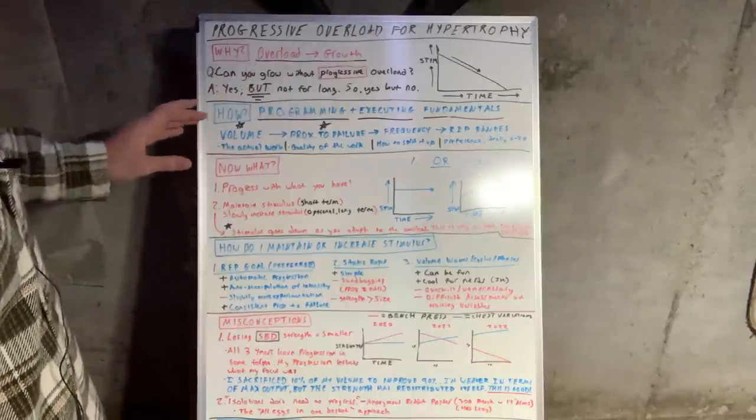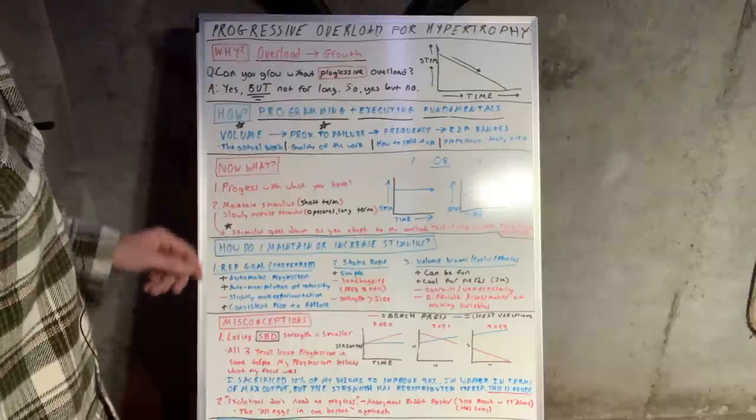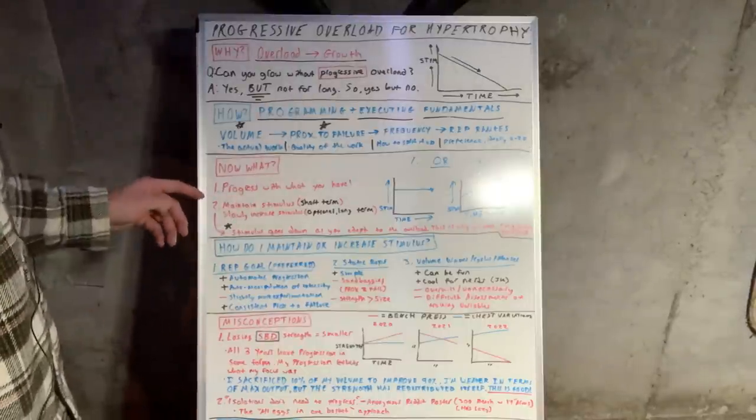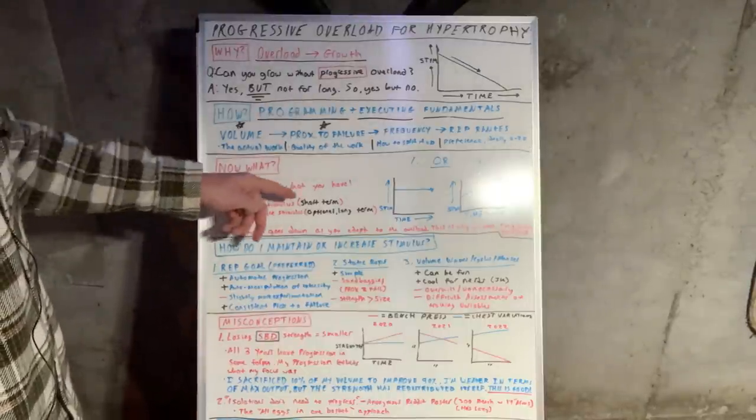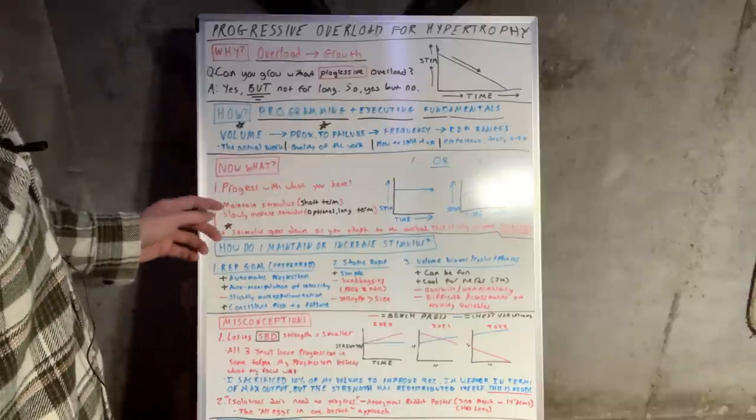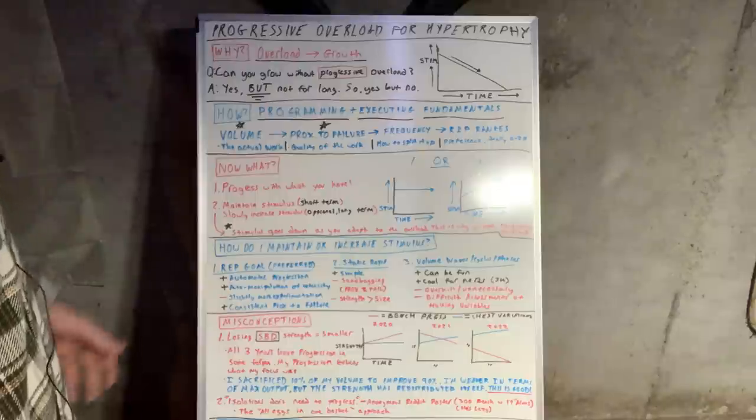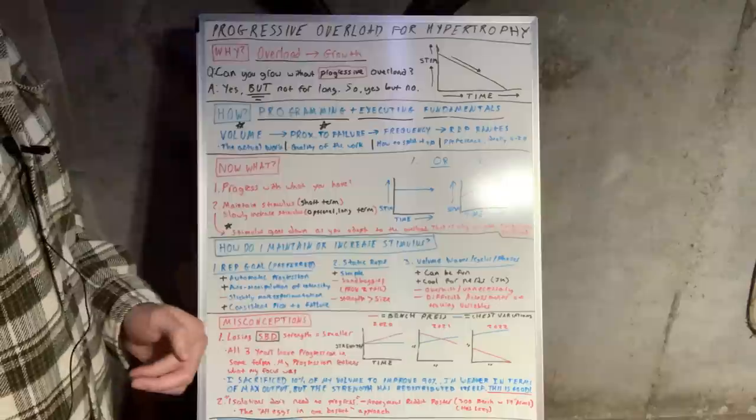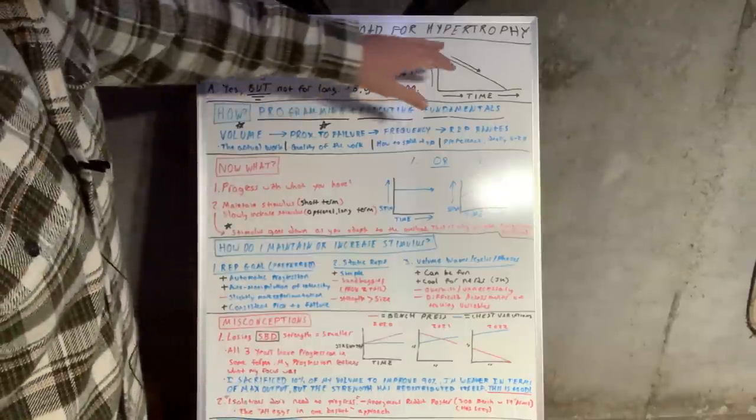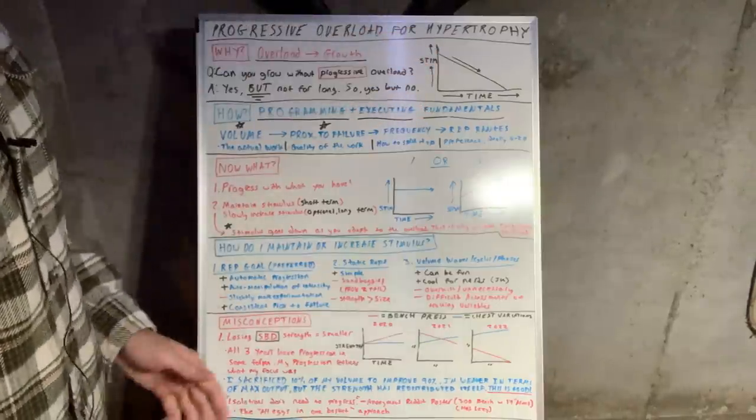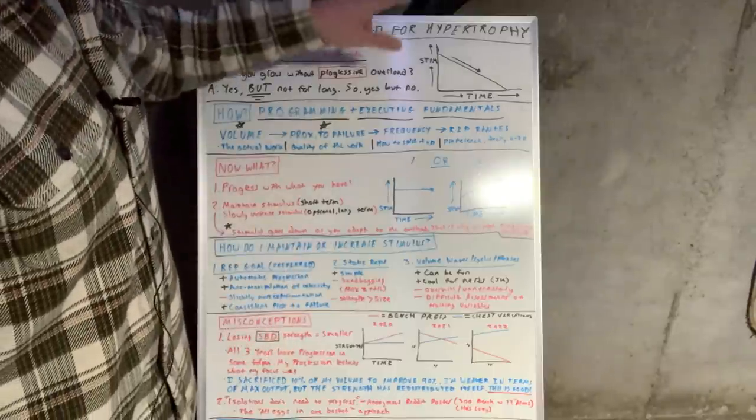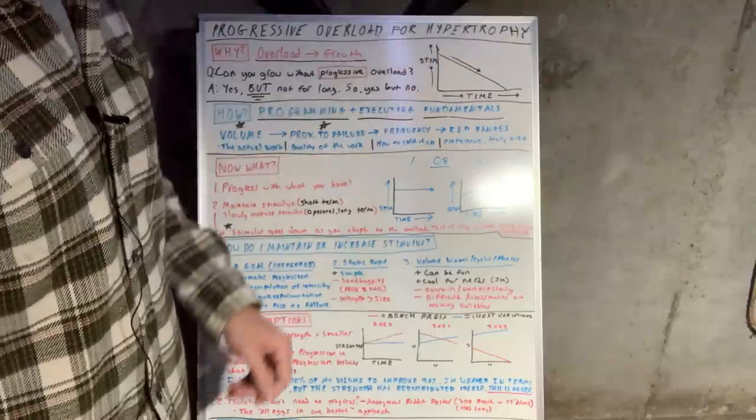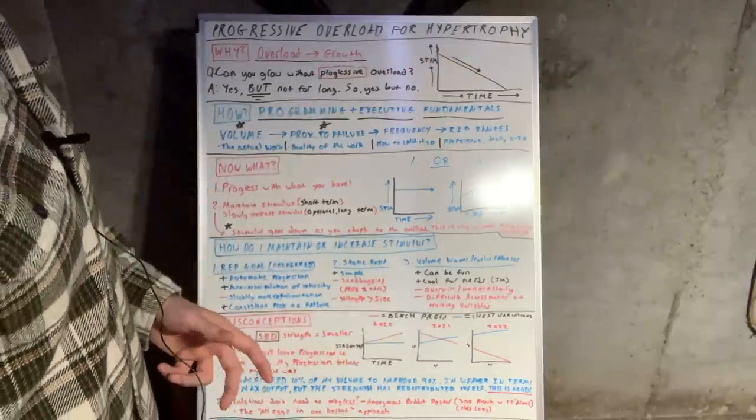So now that we have this, the next section is gonna be now what? The first step is progress with what you have. Very straightforward - start training, get better at it. Number two is gonna be maintain the stimulus short term, or you could slowly increase the stimulus long term. And this might sound confusing to people that don't fully understand this yet. You have to refer back to this. If it's three sets of 10 with a 45 pound barbell curl, as you get better at that, the stimulus goes down. So in order to maintain that stimulus, you need to somehow overload and progress that overload in your training.